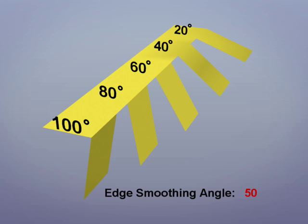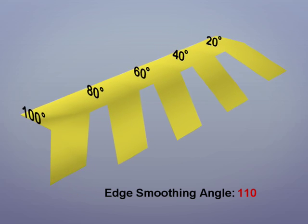At seventy, the sixty degree angle is added. At ninety, the eighty degree angle is added. Finally, at a hundred and ten, all the angles have become smooth shaded.